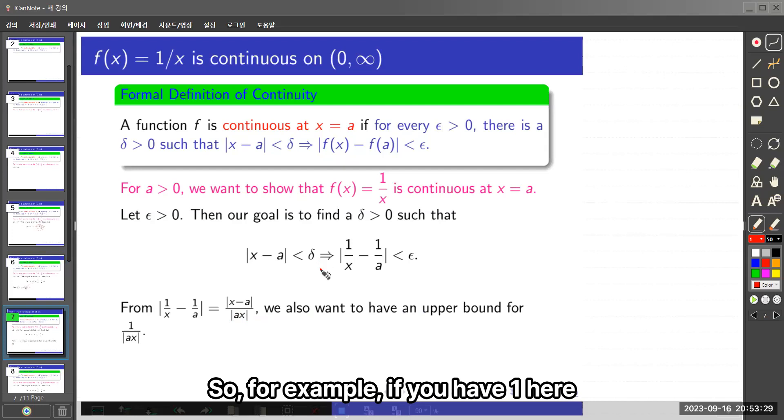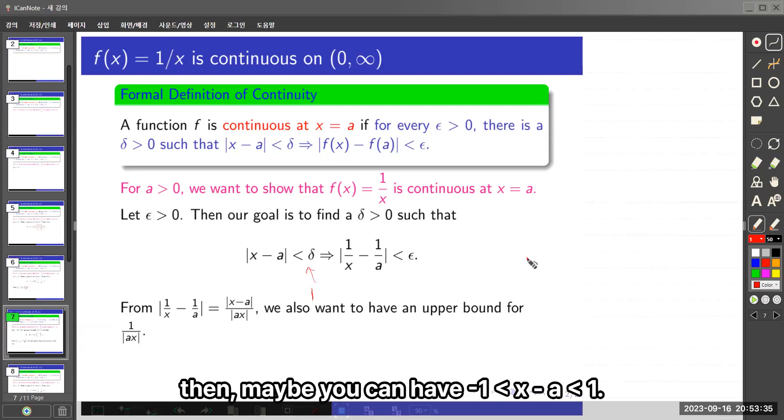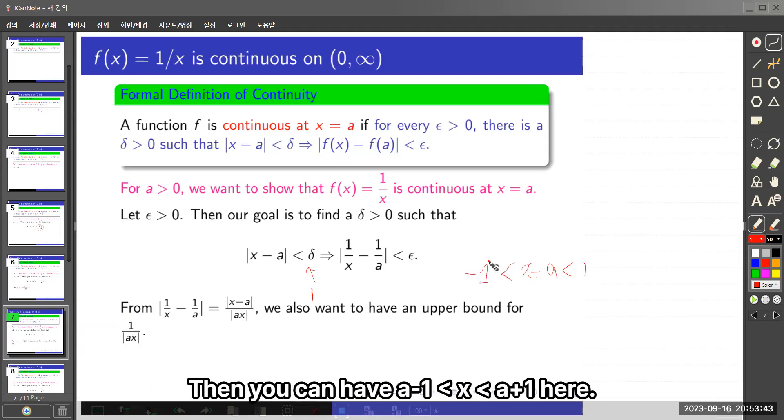For example, if you have a 1 in here, I mean maybe assume that delta equals 1. Then you can have |x - a| less than 1. Then you can have x less than a + 1 and bigger than a - 1 in here.